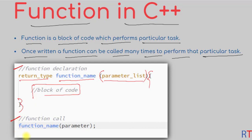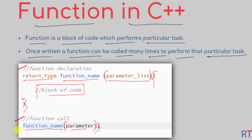To call the function, the syntax is: first you have the function name, then inside the parentheses we pass the parameter list, and then we put a semicolon at the end.